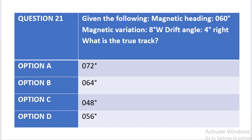Question 21 in the BNC series. The question states, given the following: magnetic heading 060 degrees, magnetic variation 8 degrees west, drift angle 4 degrees right, what is the true track?